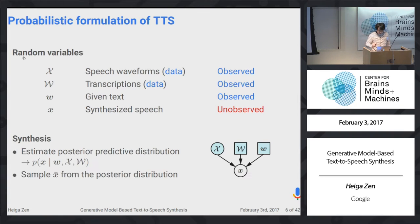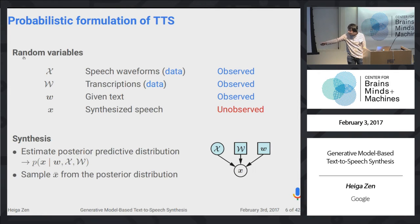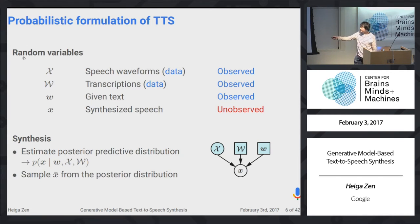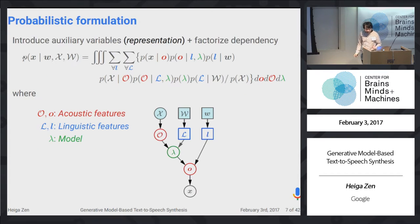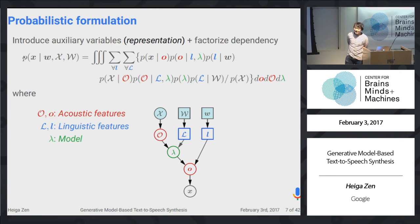To solve this problem, we estimate the posterior probability of the speech waveform given these three random variables. Once we obtain such a posterior probability distribution, we can draw a sample from it. In a probabilistic graphical model representation, we can represent this dependency structure, using blue nodes for observed variables and white nodes for unobserved variables. The second approach — concatenative synthesis — is actually similar, and can be viewed as a non-parametric method.